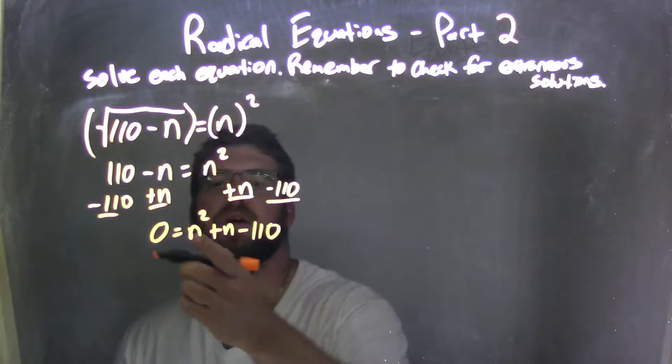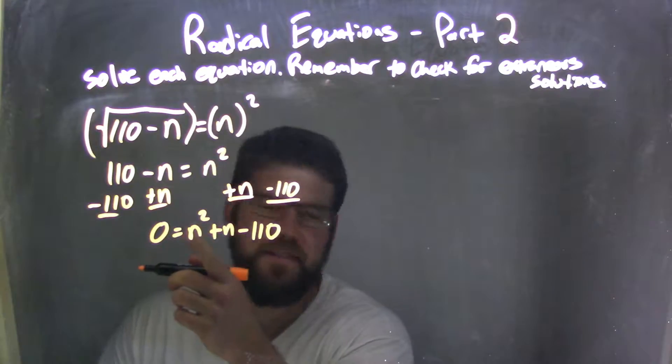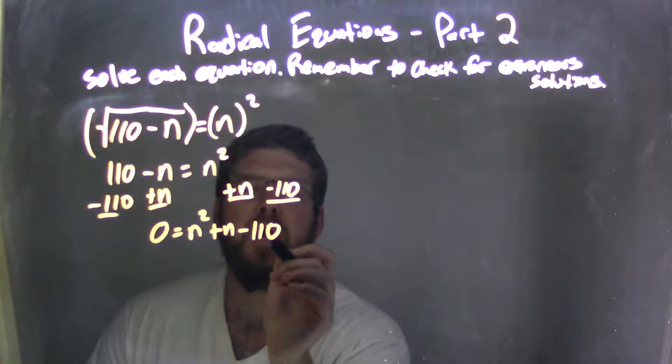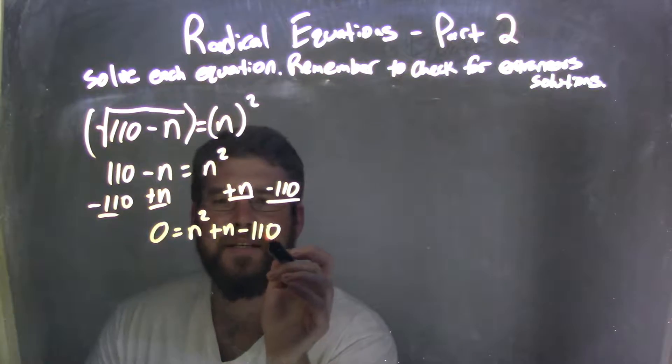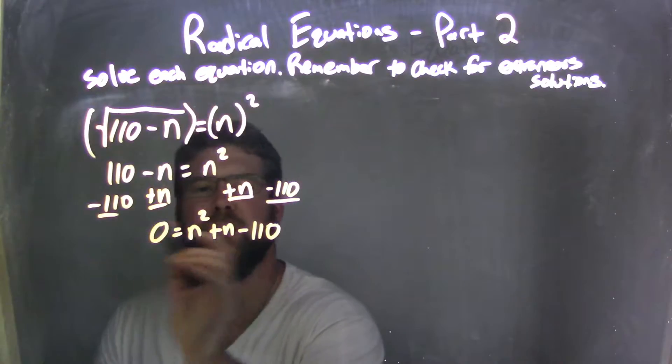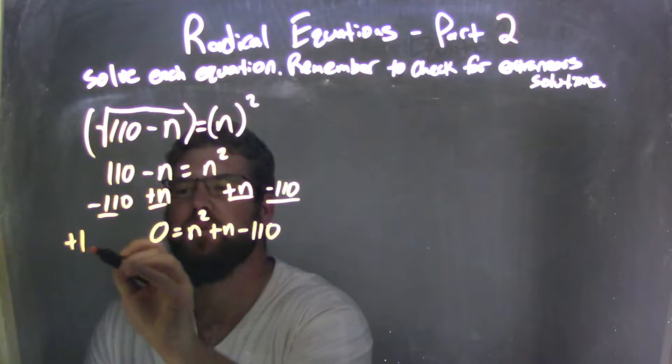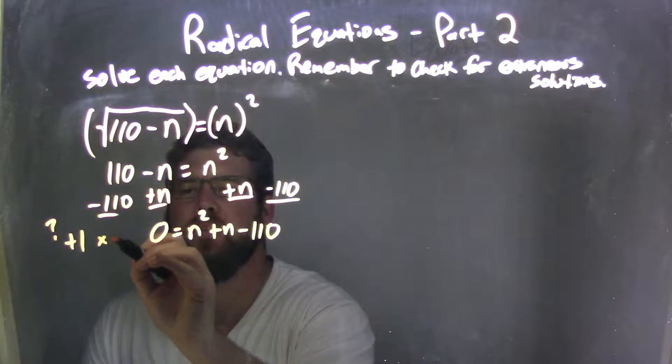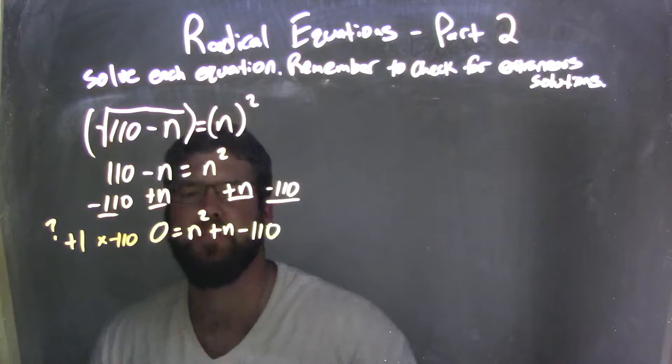Now I think to myself, since there's a one in our a value, what multiplies to be negative 1/10, but adds to be 1. So we said, what adds to be 1, but multiplies to be negative 1/10?